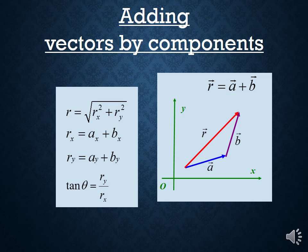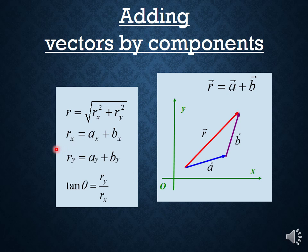If I have vector A and vector B shown here, I could resolve vector A into an A-sub-x component and an A-sub-y component, and vector B into a B-sub-x component and a B-sub-y component. Vector R is the sum of those two vectors: R-sub-x would just equal the sum of the two x-components, and R-sub-y would just equal the sum of the two y-components.